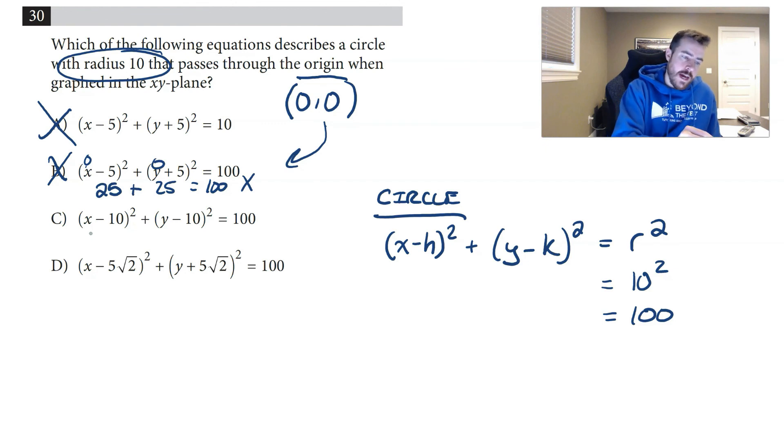I can go to choice C. 0 - 10 would be -10, -10² is 100, plus 0 - 10, -10² is another 100. But 100 + 100 does not equal 100, it equals 200, so that'd be out. So by default I know it has to be D.